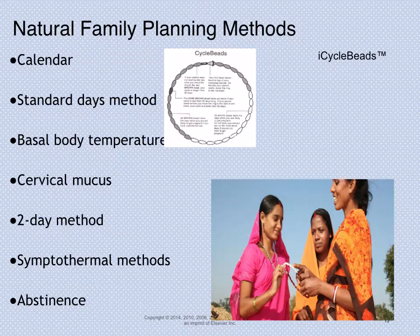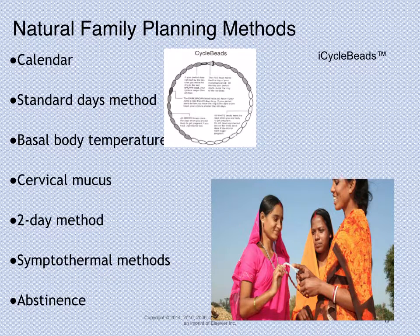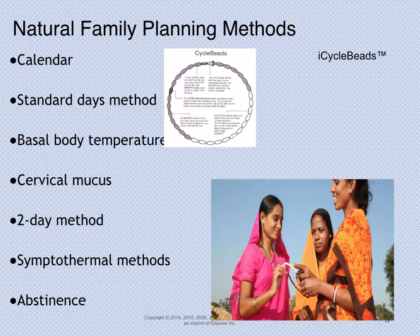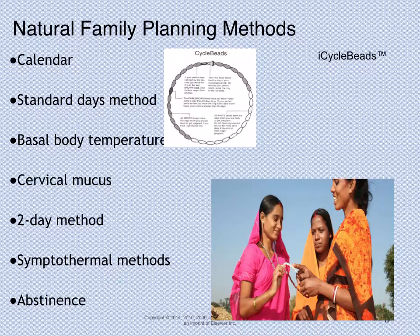Natural family planning methods include the calendar method, basal body temperature, assessing cervical mucus, and abstinence. These are ways some women choose to selectively have intercourse on specific days according to their cycle. Some women use cycle beads — a calendar-based physical object where each bead represents a cycle day — to track their fertile and non-fertile days.